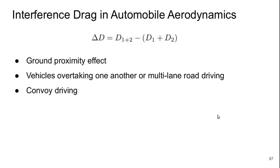Before we get to the specific situations, let's formally define what we mean by interference drag in our automotive context. So this is a delta drag and it's basically the drag of the two bodies together minus the sum of their individual drags. So it's the difference in drag and you can see that conceptually this delta D could be either positive or negative.